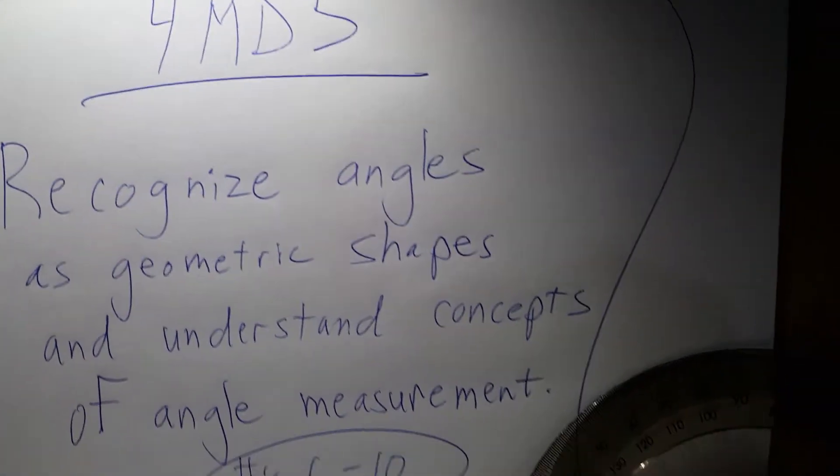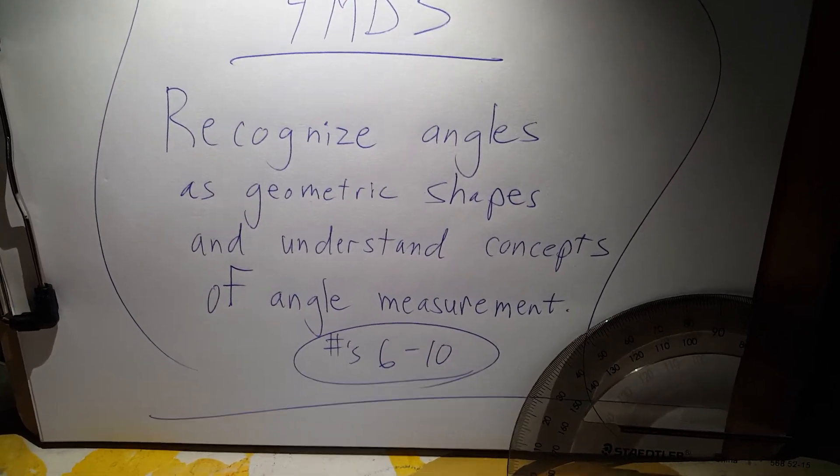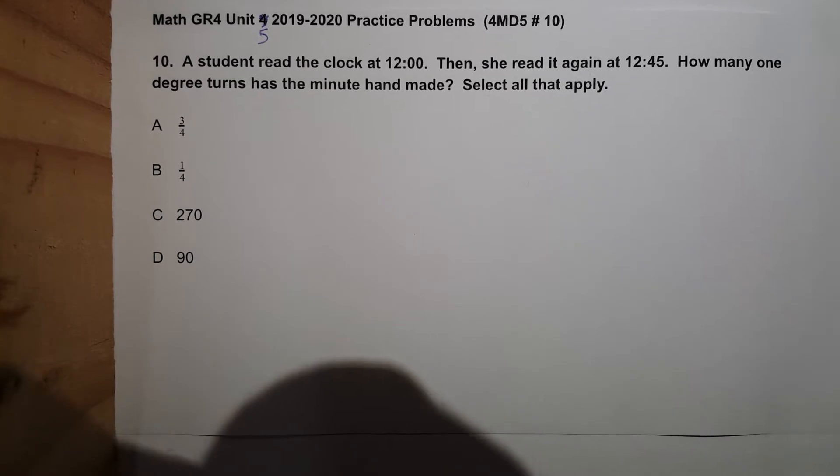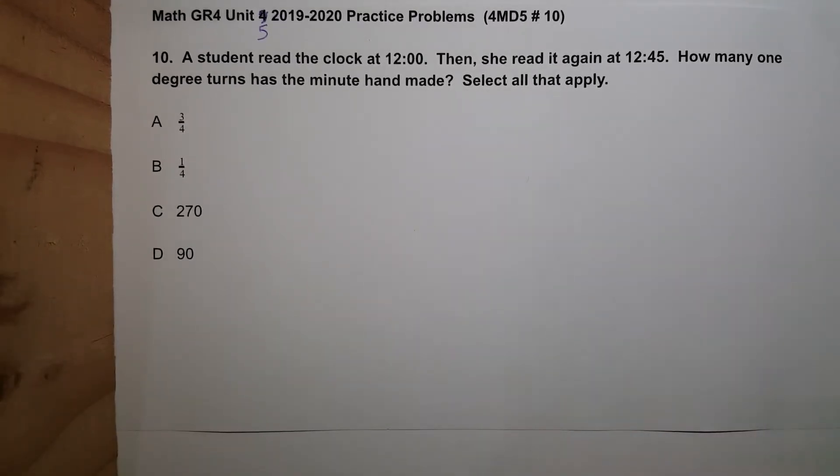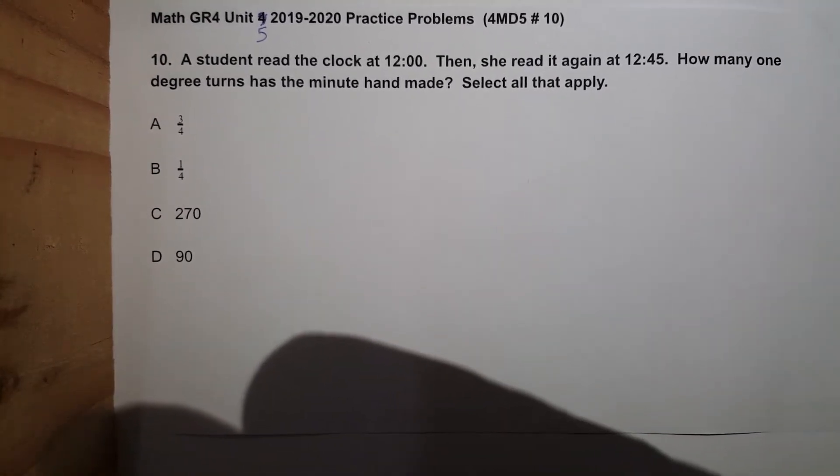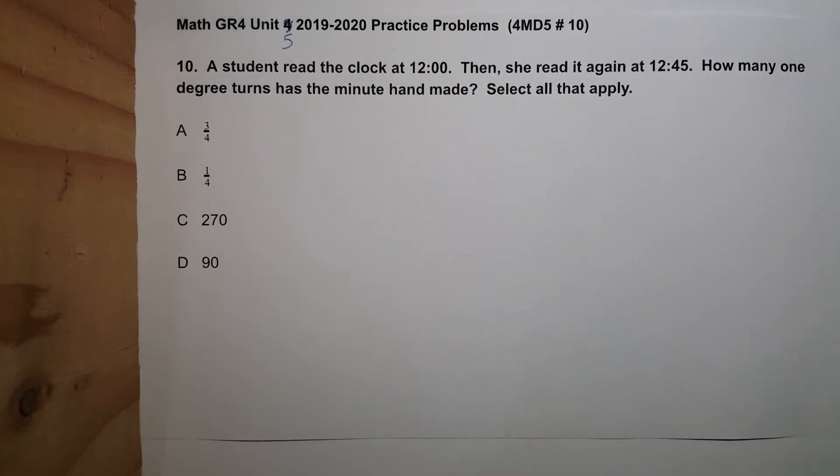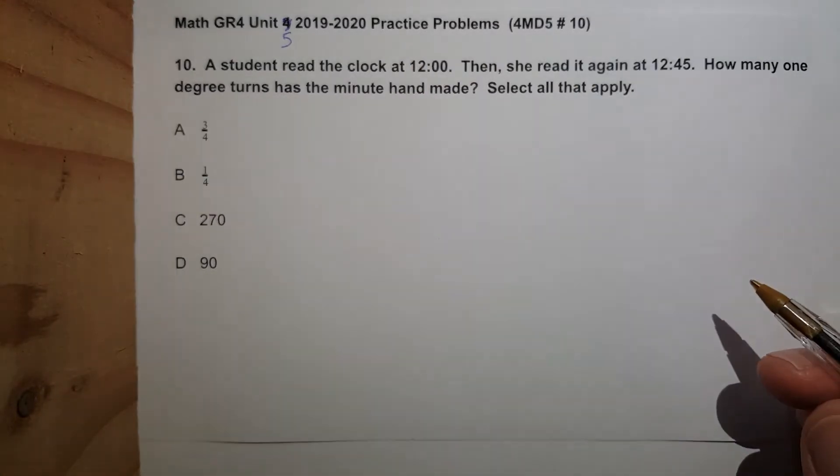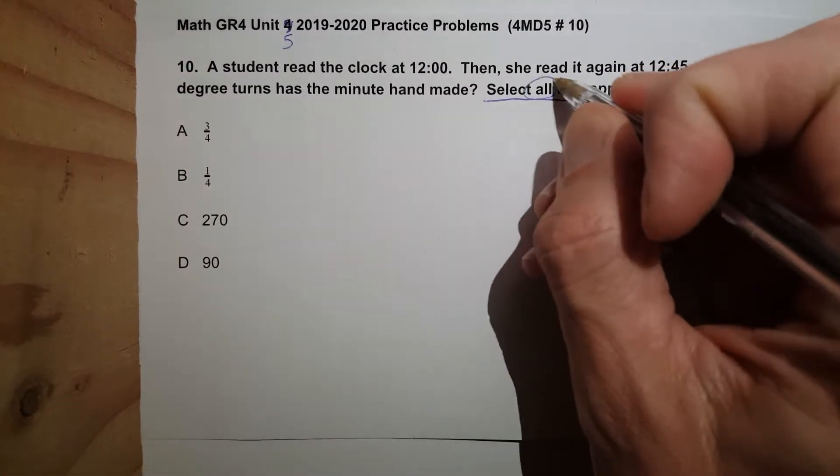Last one for this standard 4MD5: recognize angles as geometric shapes and understand concepts of angle measurement. After this we are done with 4MD5. This means you should watch the previous four recordings, number six through nine, because I'm going to tie all this in to it. Let's go backwards, select all that apply.